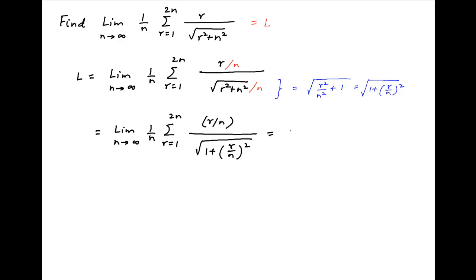This is a Riemann sum, replacing 1 upon n with dx and r upon n with x. This can be written as the integral from 0 to 2 of x dx divided by square root of 1 plus x squared.